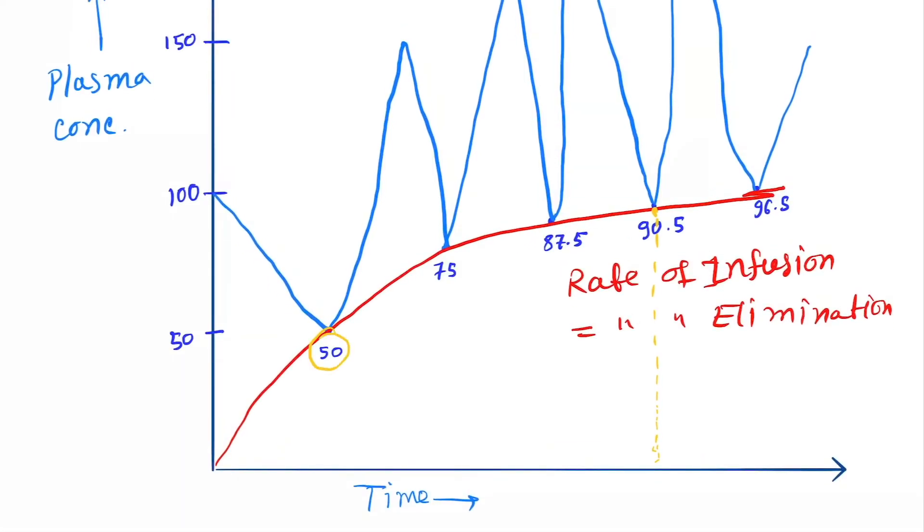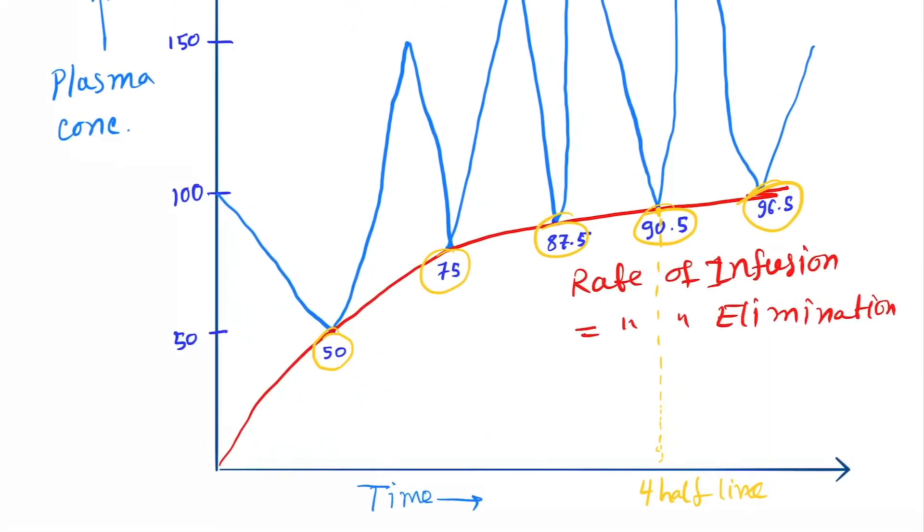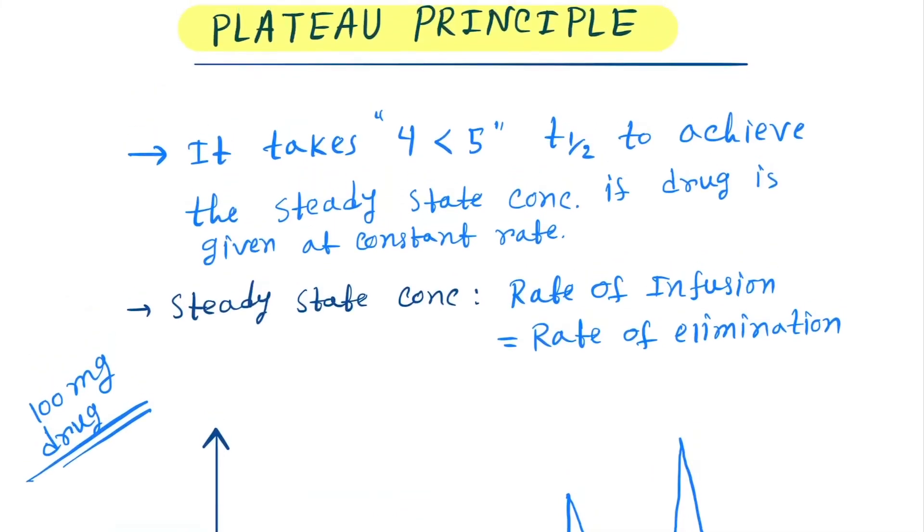Counting the half-lives: one, two, three, four, five half-lives. So this is the concept of the plateau principle.